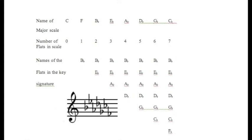A flat has 4: B, E, A, D. D flat has 5: B, E, A, D, G. G flat has 6: B, E, A, D, G, C.